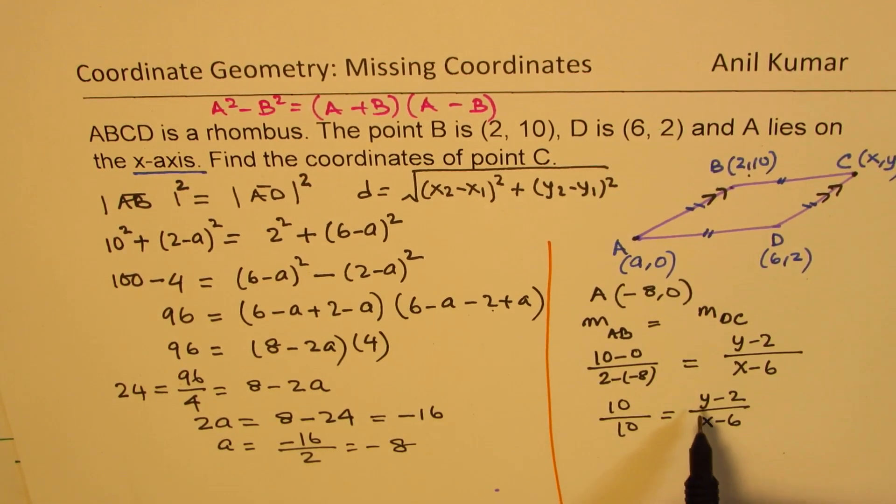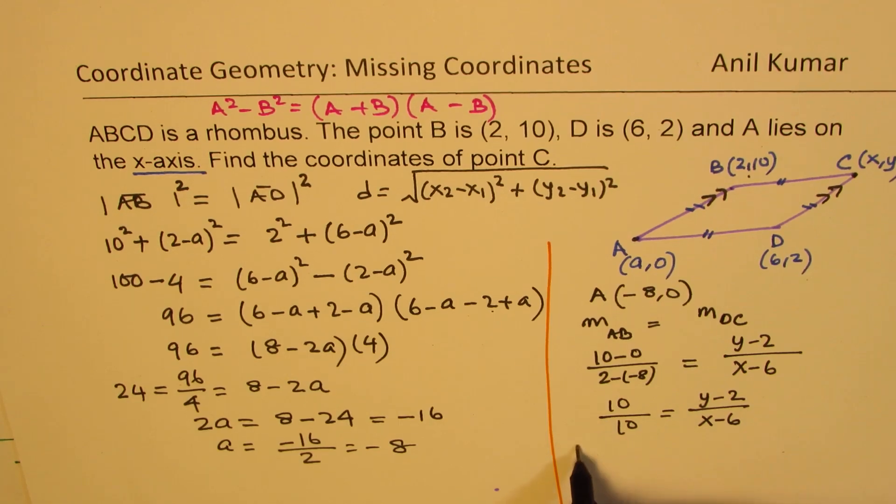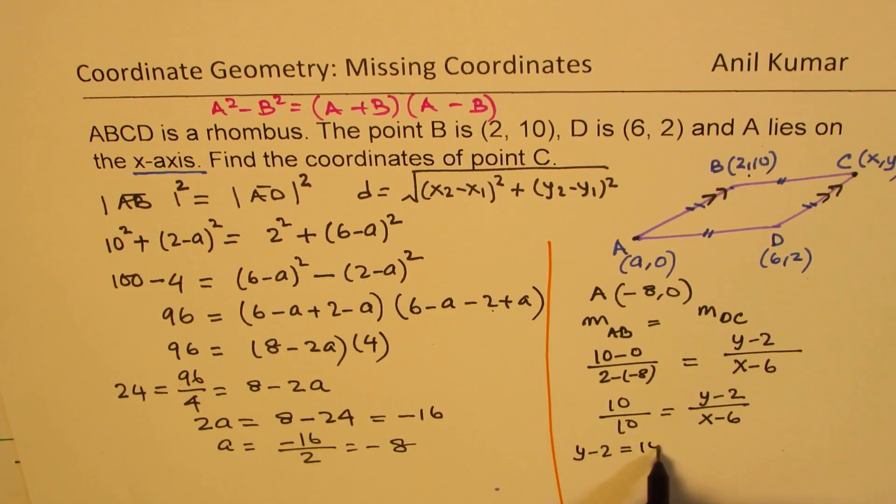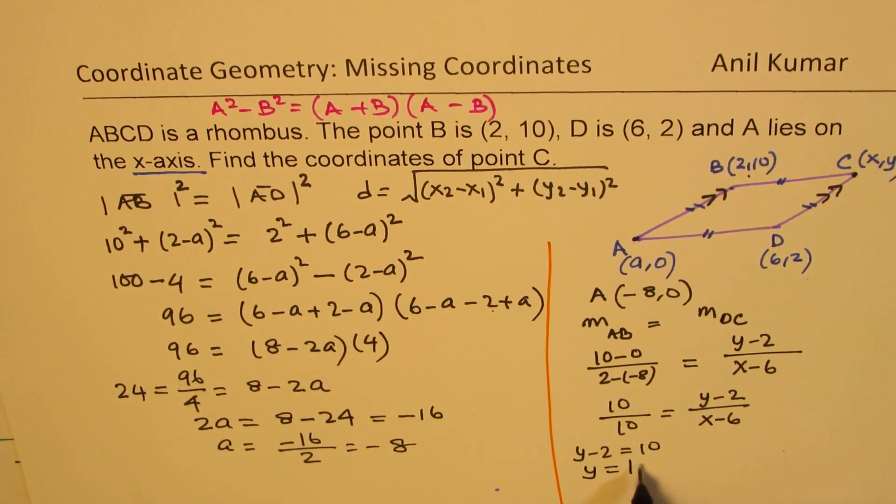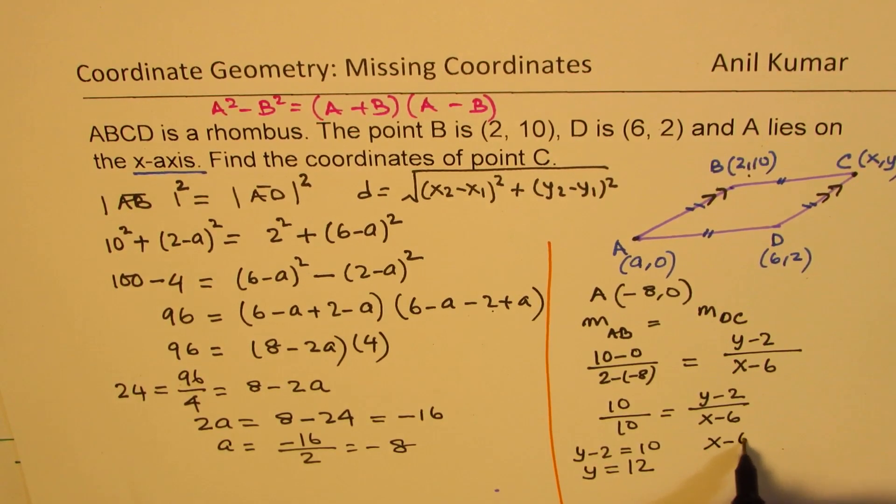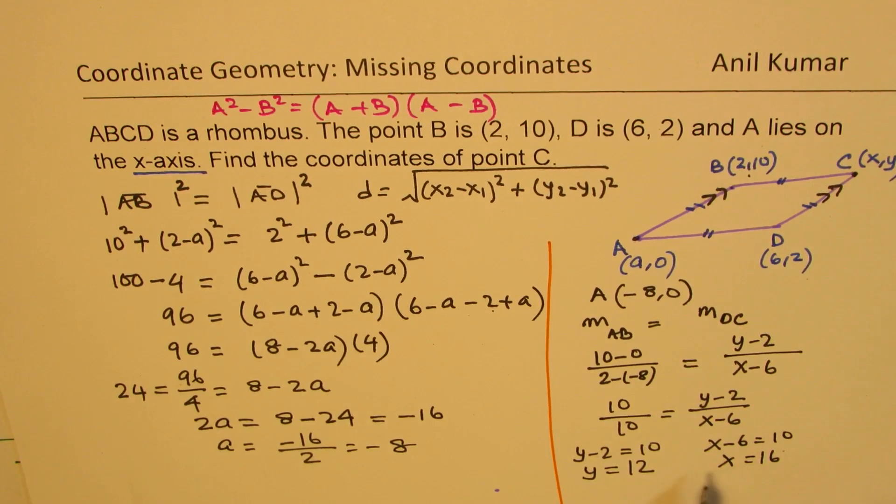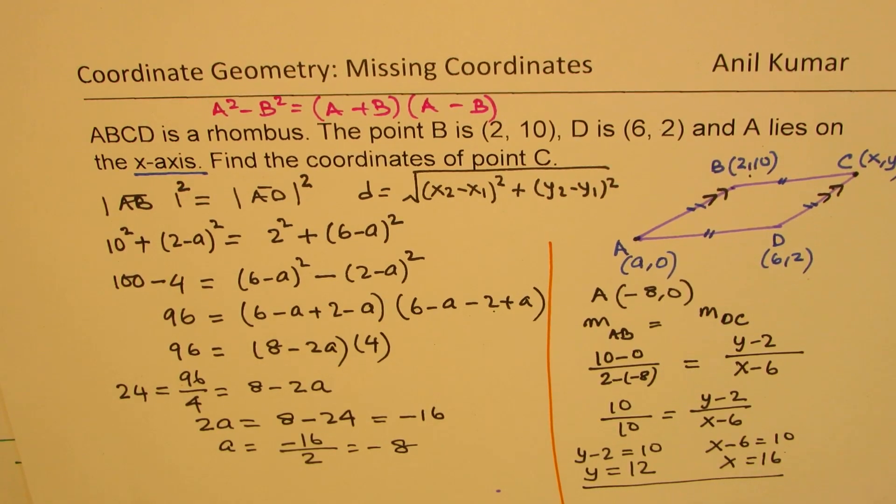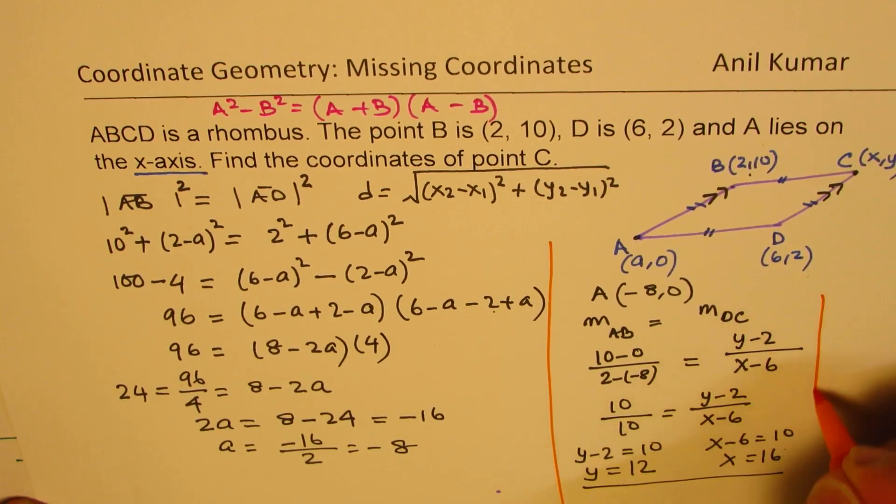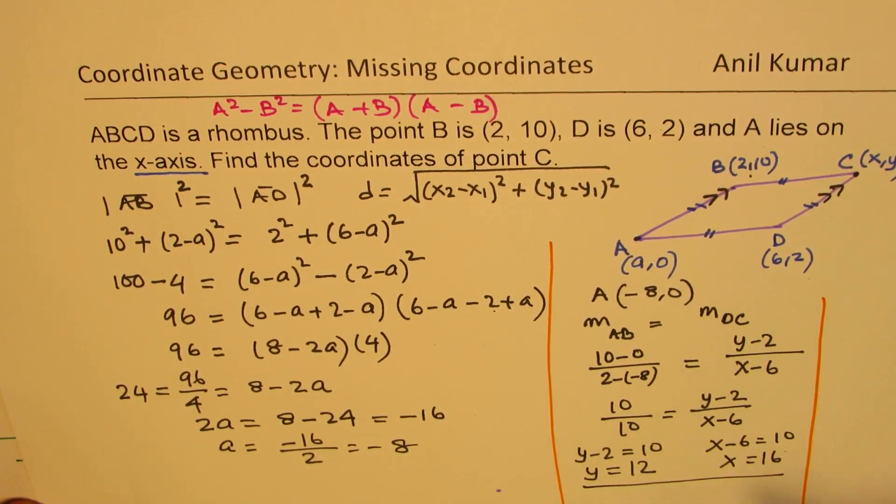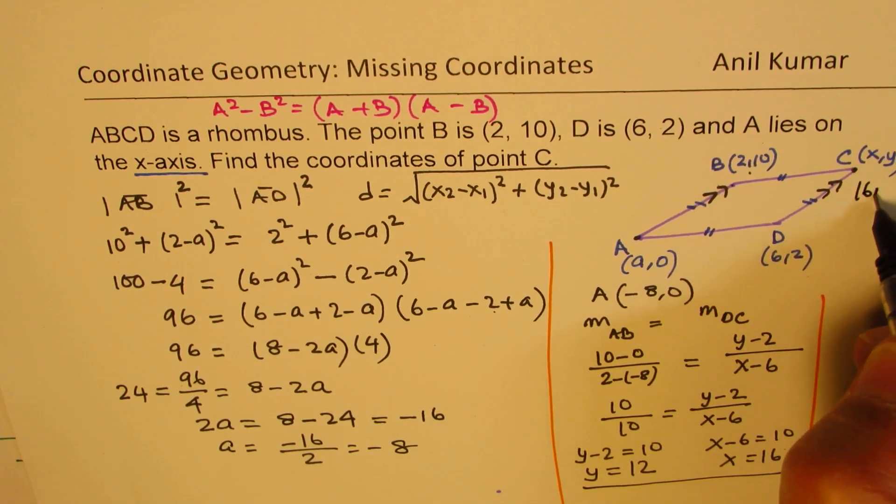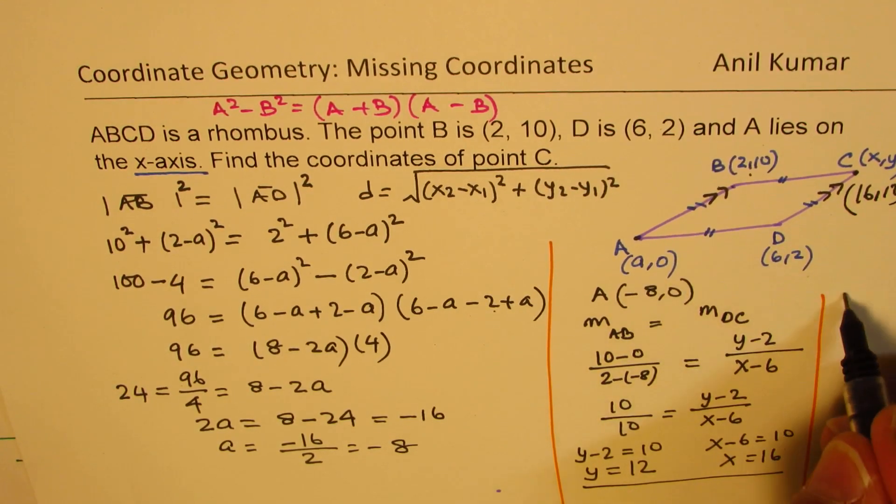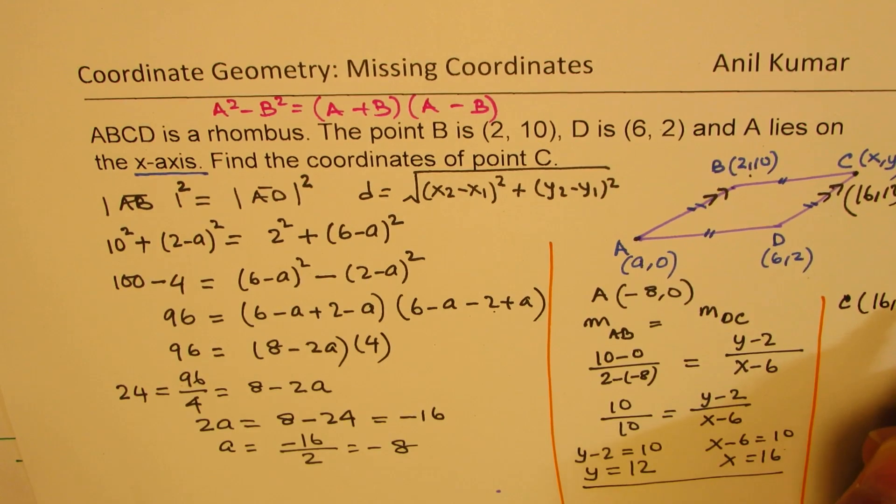So we can equate separately y-2 as 10. So we get y-2 equals 10, so y equals 12. And we have x-6 equals 10, x equals 16. And that gives us the coordinate points of point C as (16,12). Do you see this idea? So that's a brilliant idea. We could always write this as (16,12). So coordinates of point C are (16,12).